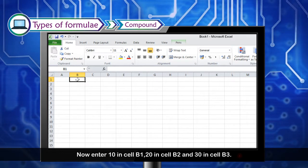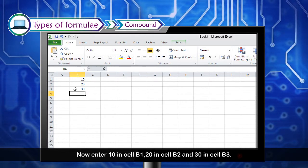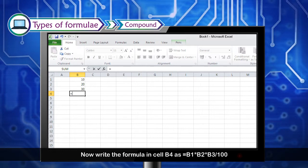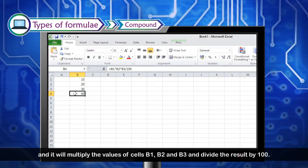Now enter 10 in cell B1, 20 in cell B2, and 30 in cell B3. Write the formula in cell B4 as equals B1 into B2 into B3 by 100.